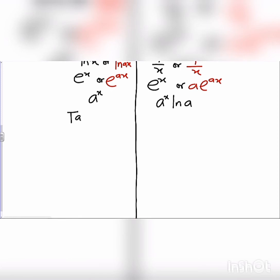When we have tan x and we differentiate tan x, it gives us sec squared x. When we have cot x and we differentiate cot x, it gives us minus cosec squared x.